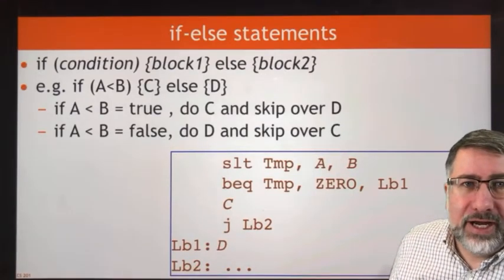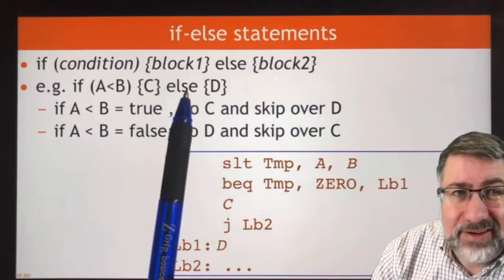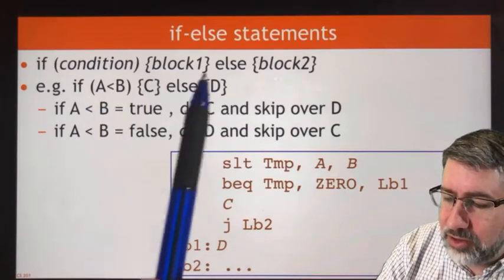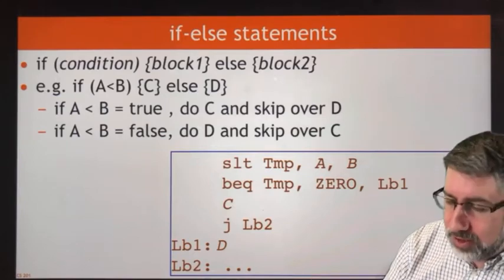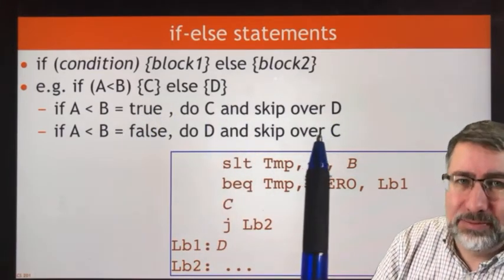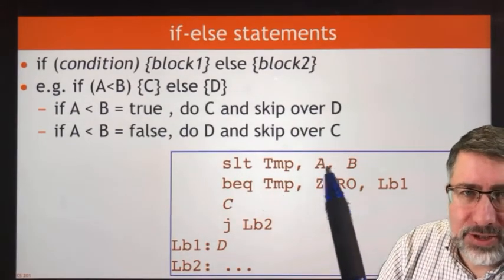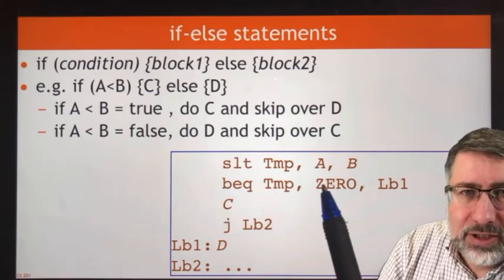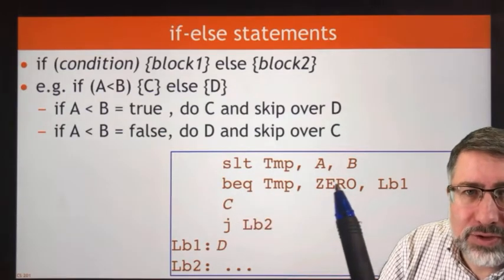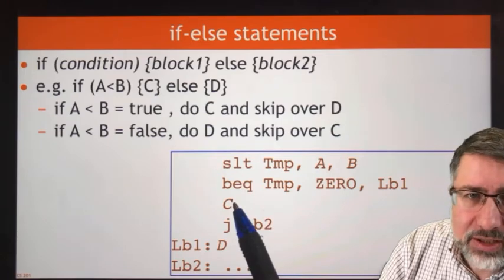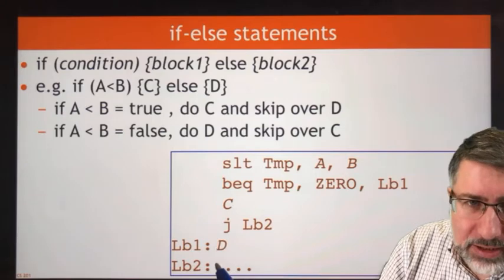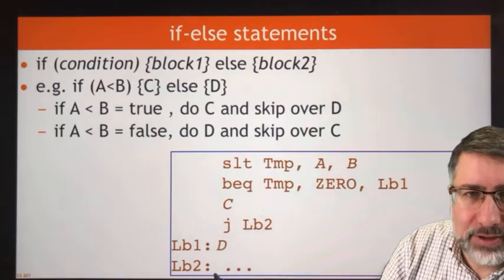Here's an if-else: if A less than B, do C; otherwise do D. It's important to recognize that if A less than B is true, we do C and skip D, and if A less than B is false, we do D and skip C. First we set some temporary register based on A and B, then branch on equality to label one — where we skip C and do D and carry on. If we don't match this condition, we fall through and do C. But once we've done C, we always want to skip D. So either we skip C and go to label one and do D and carry on, or we do C and skip to label two and carry on.